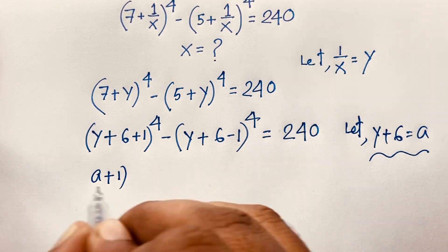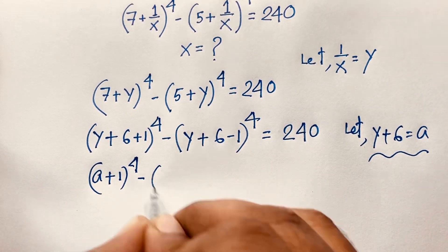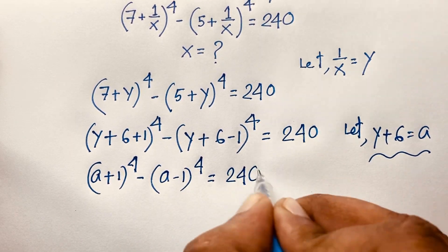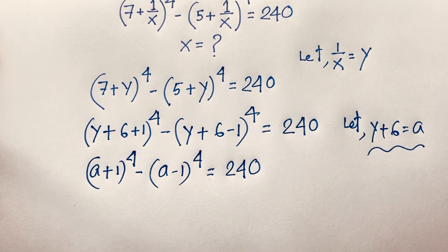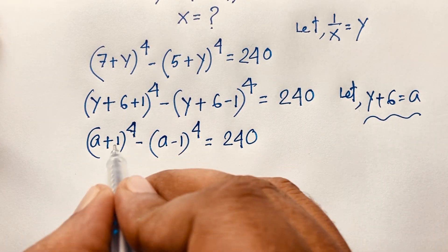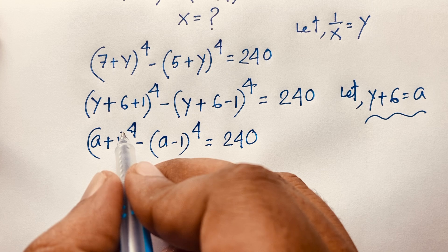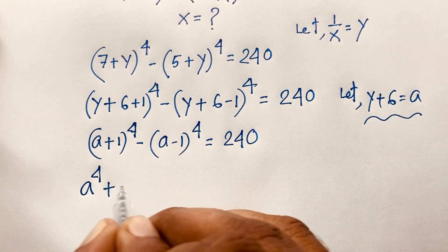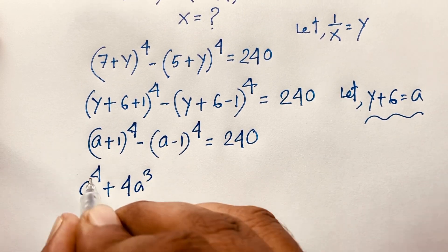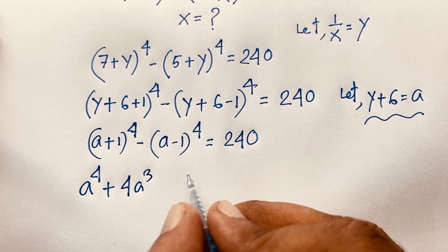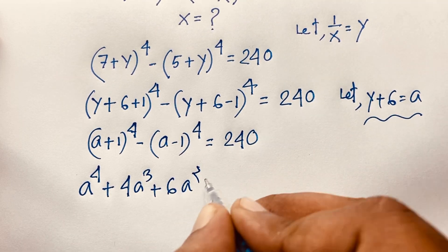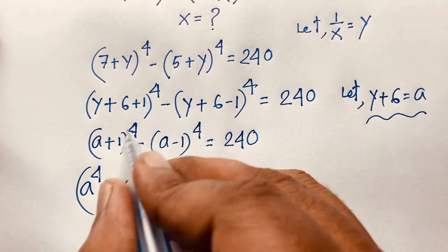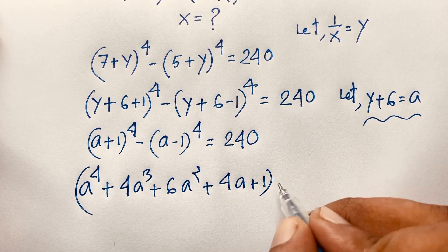The equation becomes (a + 1) to the power 4 minus (a - 1) to the power 4 equals 240. Applying Pascal's rule, (a + 1)^4 expands to a^4 + 4a^3 + 6a^2 + 4a + 1.